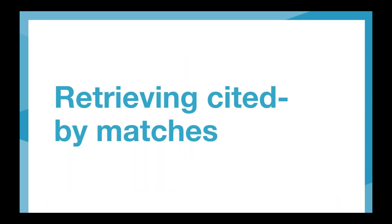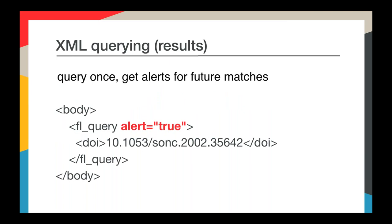When a match is made in a reference deposit, we make it available to the member responsible for that DOI as a cited-by match. We have a few methods to retrieve your matches. The common and long-standing method is to submit cited-by query XML using CrossRef's query schema. The query contains only the DOI of the cited article stored in the FL query element. If you set the alert flag to true, your query will be stored in our system and we'll send you an email alert when a new match is found. This XML can be posted for asynchronous processing or sent as an HTTP request.